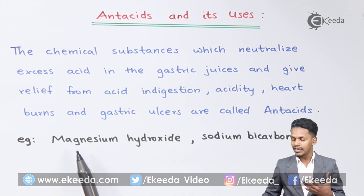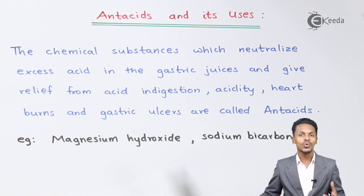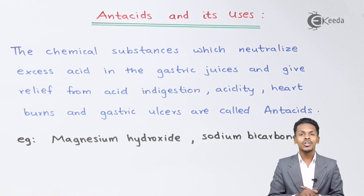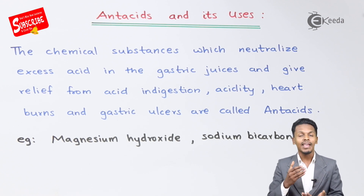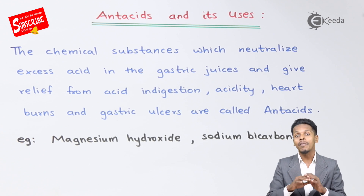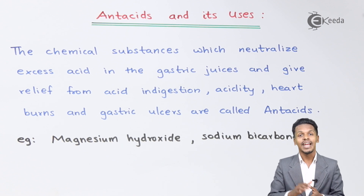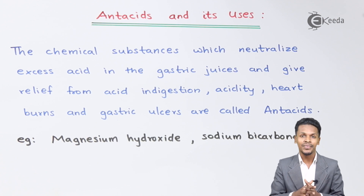Those antacids are magnesium hydroxide and sodium bicarbonate — these two act like antacids. The main function of antacids is to neutralize the acid produced in our stomach, thereby maintaining the pH value. In fact, the name 'antacid' means it neutralizes the acid, which is how the name came about.